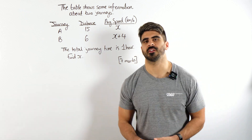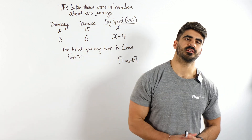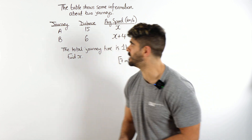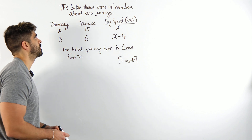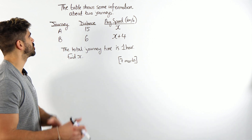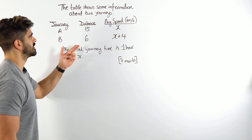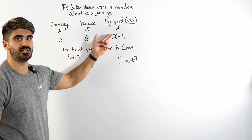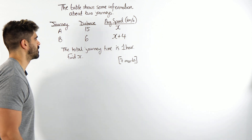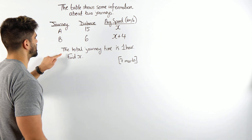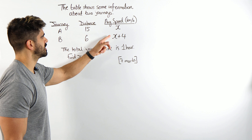Seven mark traffic warden question. This is a question that you might get in your interview. It says the table shows some information about two journeys: Journey A and Journey B. Here's the distance travelled, here's the average speed. Obviously you want to catch those people travelling too fast. It says the total journey time is one hour. Find the value of x.